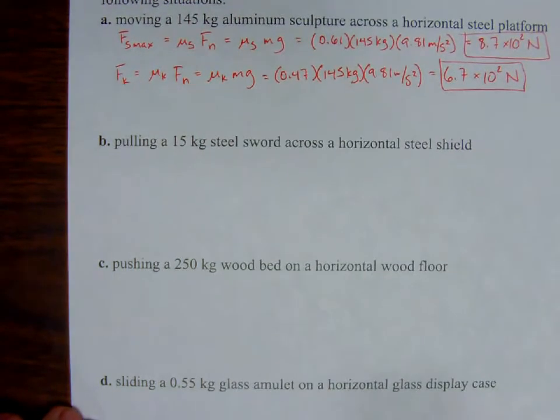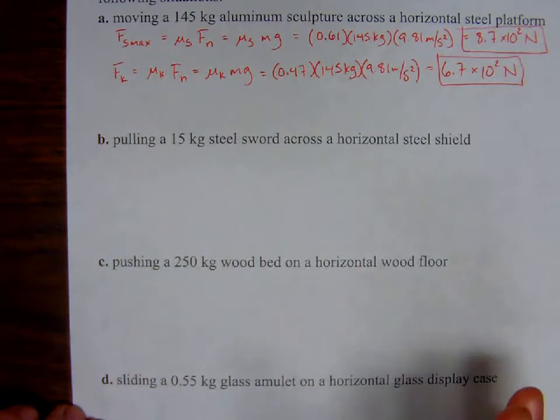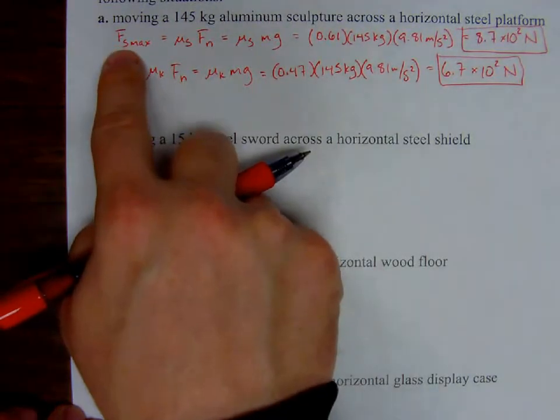So, again, you have to get it started, right, that's overcoming this FS max, once you get it started, you're considering the coefficient of static friction, and then once it's moving, in order to keep it moving, you're going to be using the coefficient of kinetic friction. Okay, and so they're telling you that, using these four different verbs, they all mean they're moving.